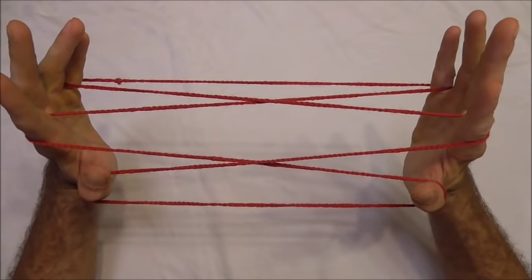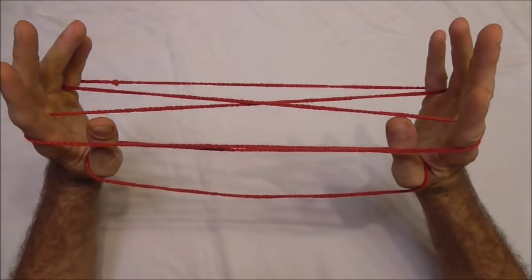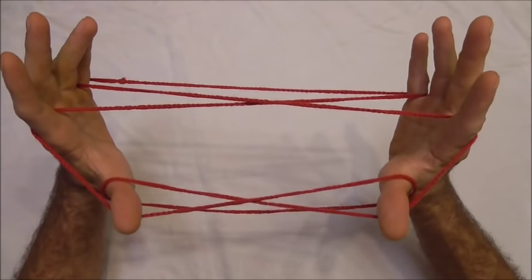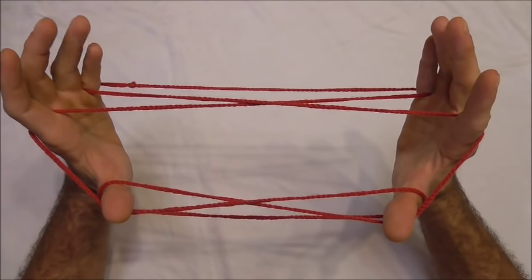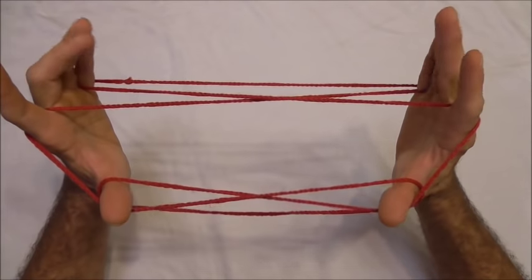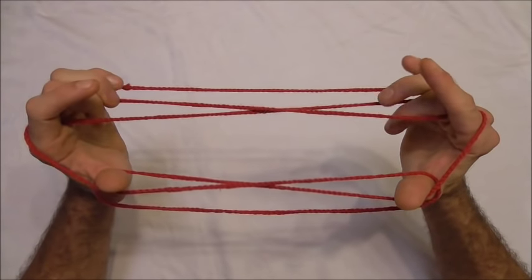Now insert your thumbs into the pointer finger loop from below. Then insert your middle, ring, and little finger into that middle finger loop by first going into this triangle here, careful not to lose your little finger loop.